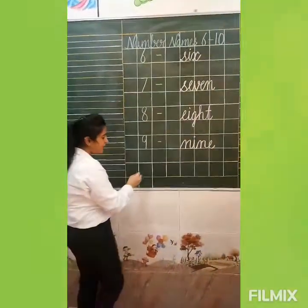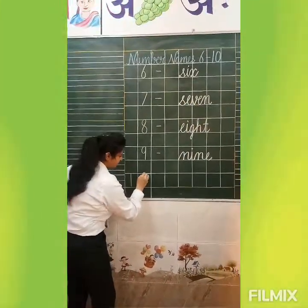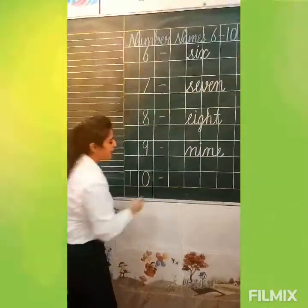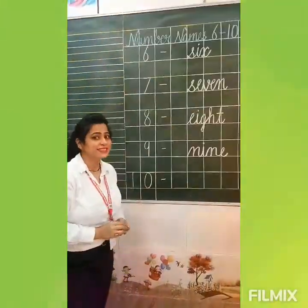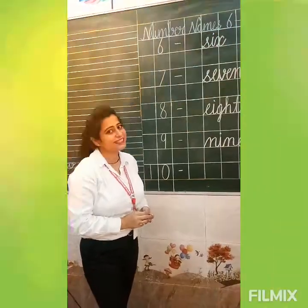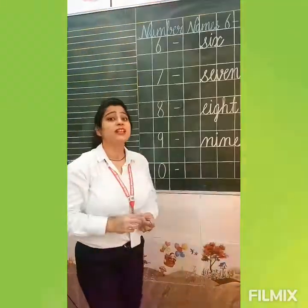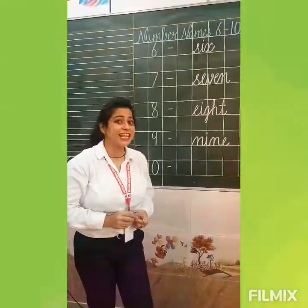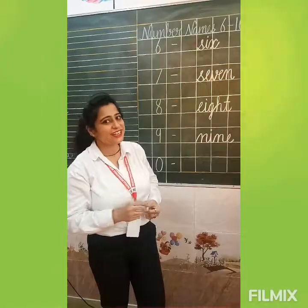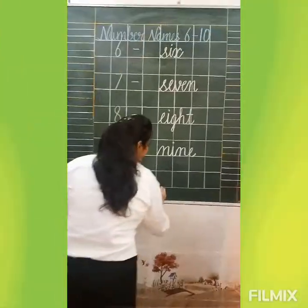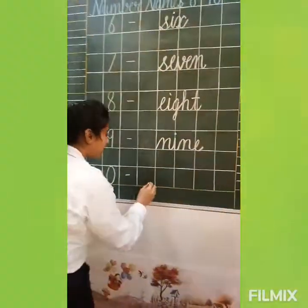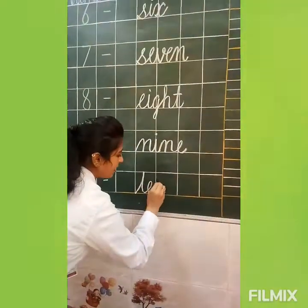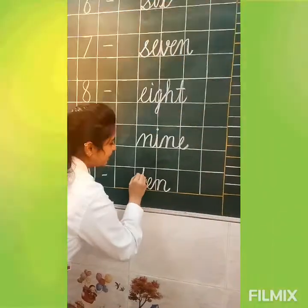So our next number is number 10. And what is the spelling of number 10? T-E-N. 10. Tell me. T-E-N. 10. So we will write here the spelling of number 10. T-E-N. 10.